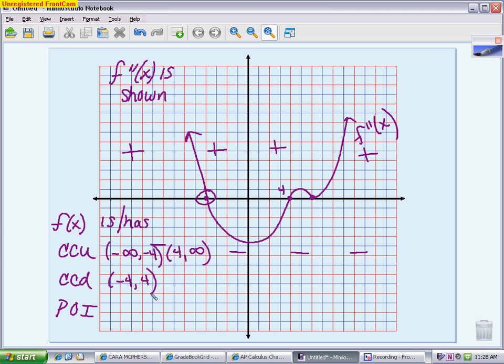For your points of inflection, your points of inflection are going to occur whenever it crosses over from above to below or below to above. So what I've circled is a point of inflection, and this is a point of inflection.